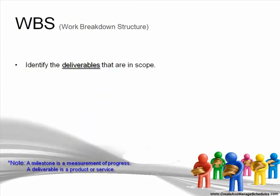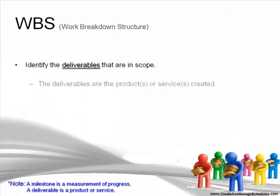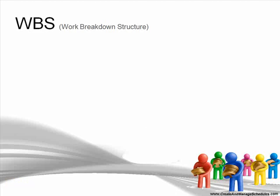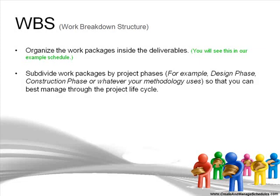Identify the deliverables that are in scope. A milestone is a measurement of progress, and a deliverable is a product or service. The deliverables are the products or services that you create — for example, a design document, technical specifications, etc. Organize the work packages inside the deliverables. Subdivide work packages by project phases — for example, design phase, construction phase, or whatever your methodology contains — so that you can best manage through your project lifecycle. Make sure that the project phases are clearly separated by one or more deliverables.